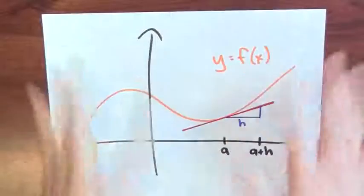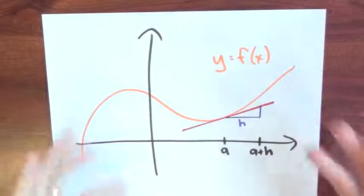Remember, f prime of x is encoding how wiggling x affects f of x. We can see this by thinking about slopes of tangent lines as well.